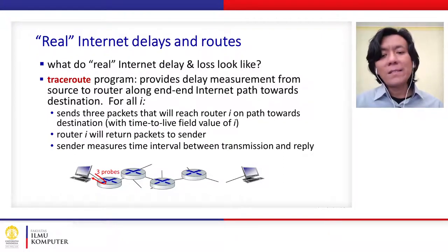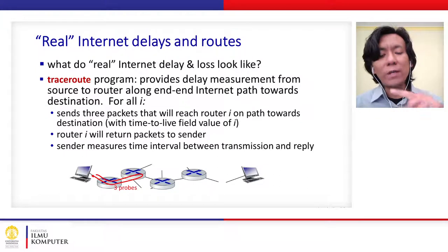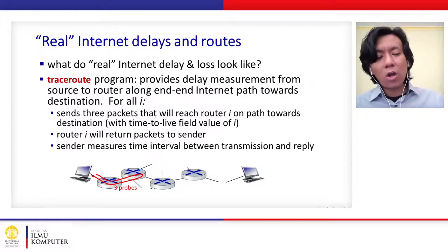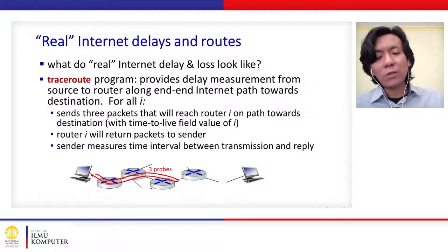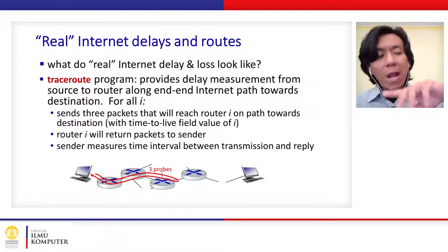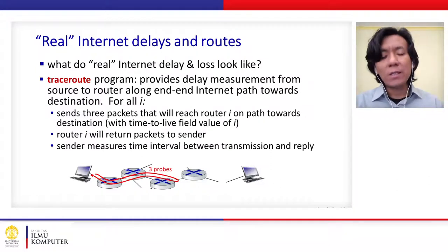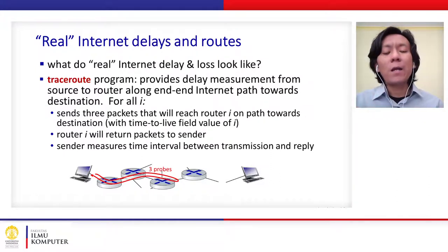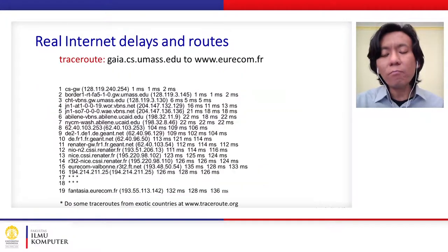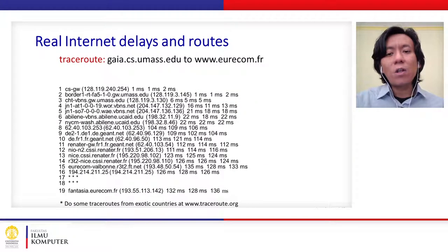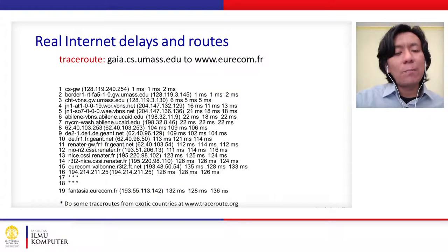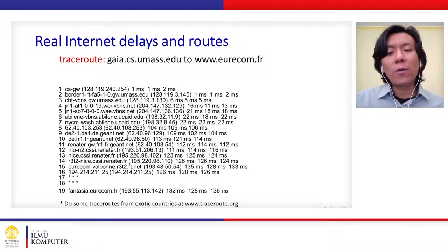For the second hop, it sends packets to the first hop, then the second hop, and measures the return. For the third hop, it goes first, second, third hop and back — continuing until it reaches the destination. Traceroute measures the delay for each individual hop along the path.